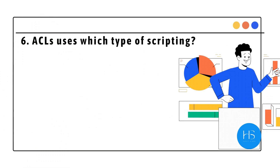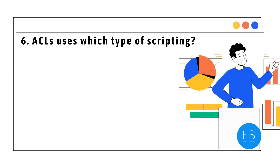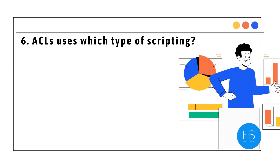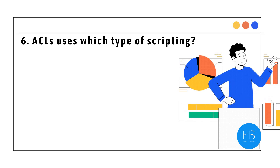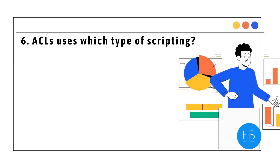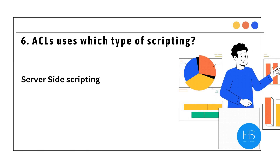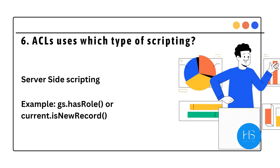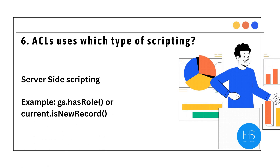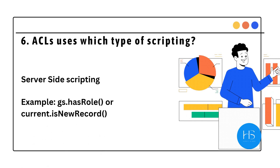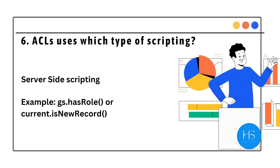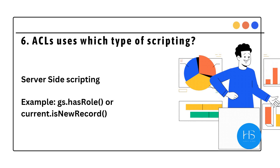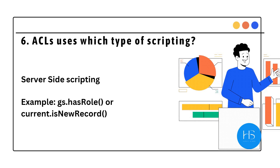Next: ACLs use which type of scripting — client scripting or server scripting? ACLs use server-side scripting. Examples include gs.hasRole() or current.isNewRecord(). You can use these statements in the server-side scripting section of ACLs.